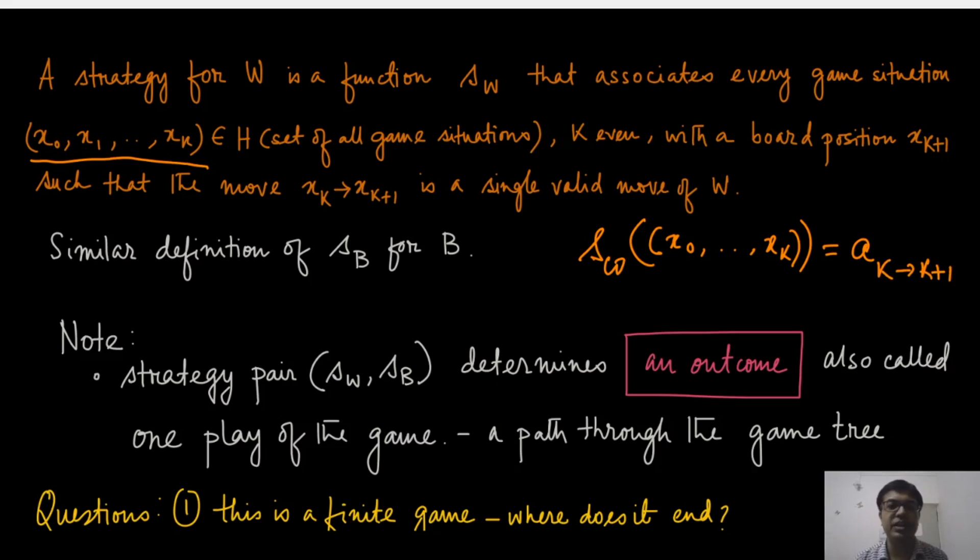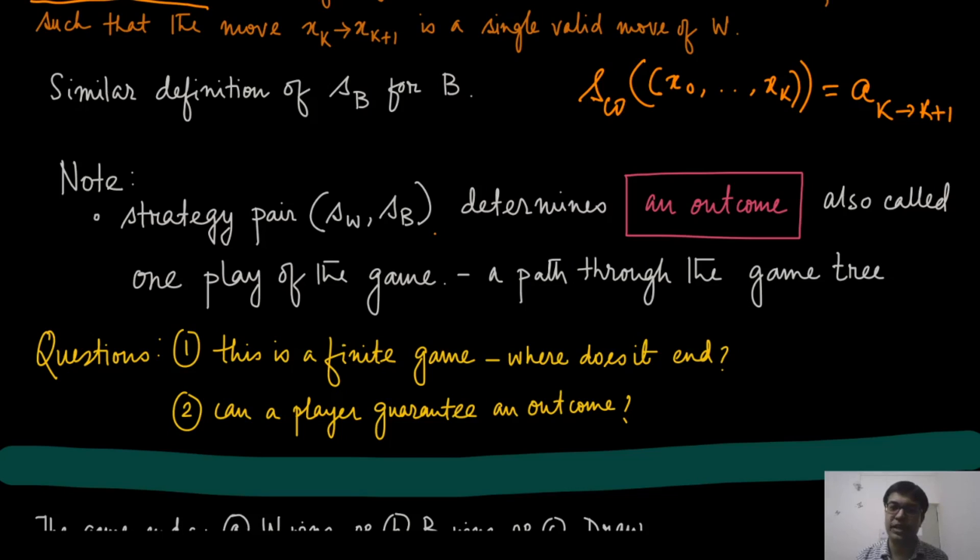Let us say that is the action. And you can make a similar definition of S_B, the strategy of player B. Now what we can notice is that the moment we fix this strategy pair for these two players, the white player and the black player, it determines an outcome. At this point, it is looking like you are giving these strategies simultaneously and the outcome is obtained. But if you think closely, the strategies are telling at which point what action you are going to take. So, it is going to tell you what is the action that the player white will take when the game situation is x_0, the initial game situation. Then whenever the next game situation arrives, what the black player will do, that will be given by S_B.